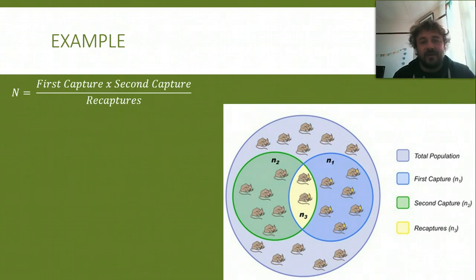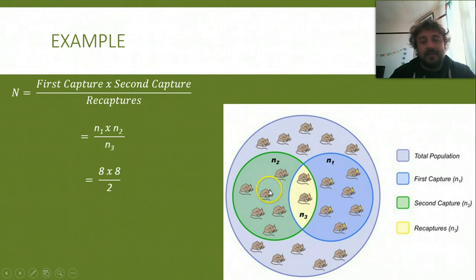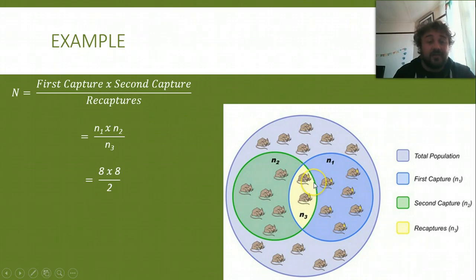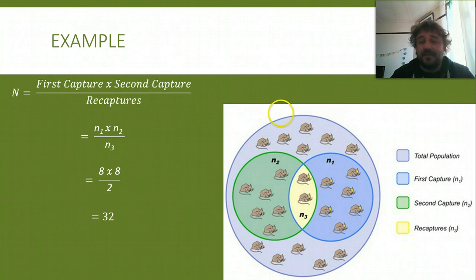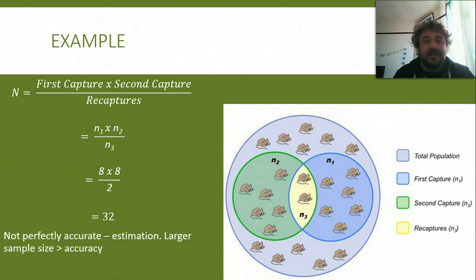First capture, second capture, divided by recaptures — or N1 times N2 divided by N3. In this case, we've got eight captured, and a second capture of eight, with two of those being recaptures. This gives us 32. If you do the maths, the actual count is about 24 — so it's not perfectly accurate, but it's not meant to be. It's an estimation. The larger the sample size, the higher the level of accuracy.